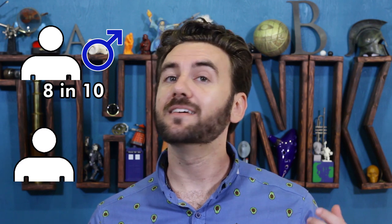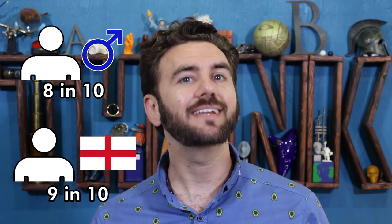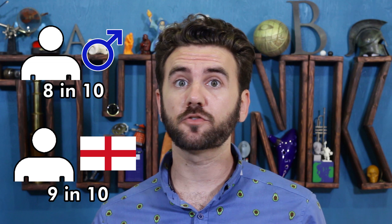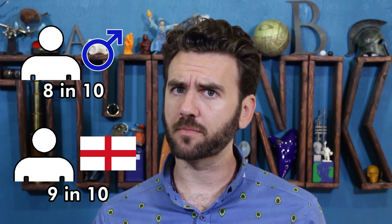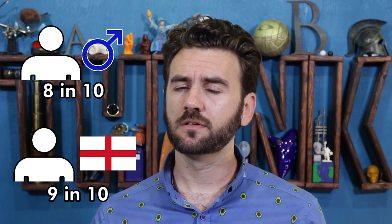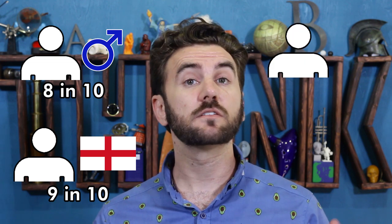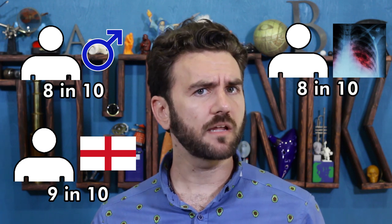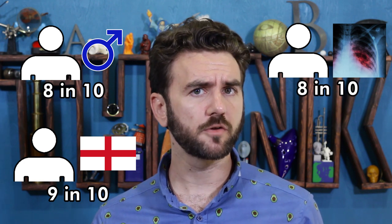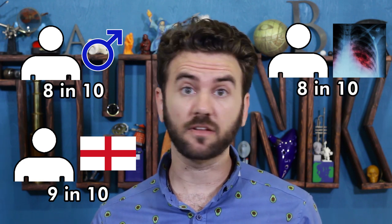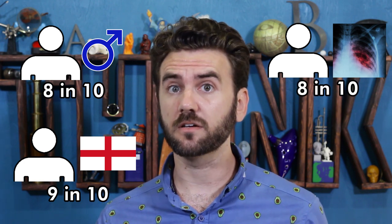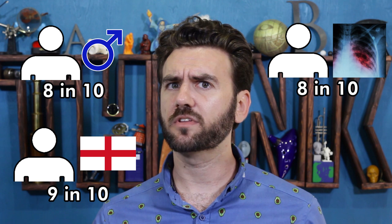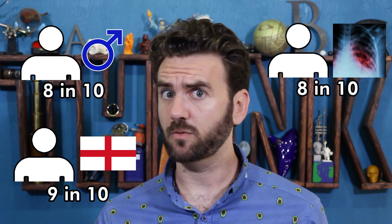John Smith is English. 9 out of 10 English people will be alive 11 years from now. What are the odds that he'll be among them? John Smith has tuberculosis. 2 out of 10 people with tuberculosis will die in the next 11 years. What are the odds that he won't?